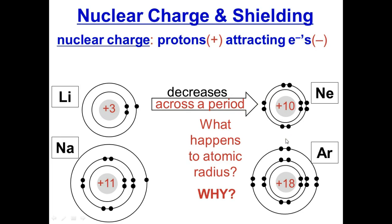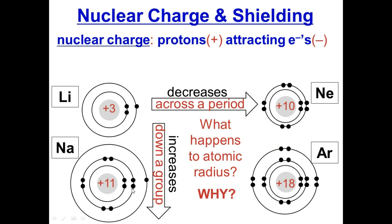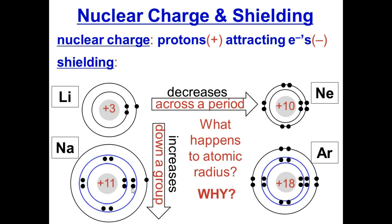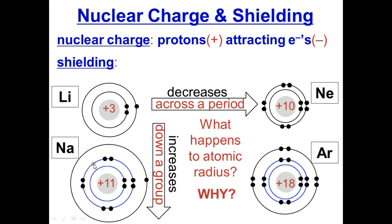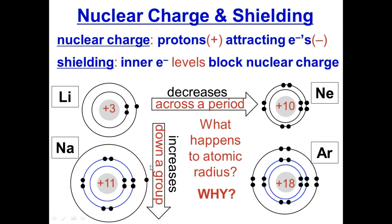As we go down a group, there are more and more shells, so the atoms actually increase in size. This has to do with shielding — because there are more and more shells or rings, the atom just gets bigger. Also, the inner electrons block the outer ring, so radius increases.